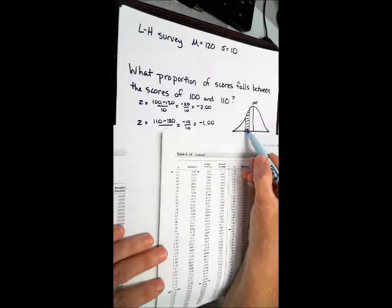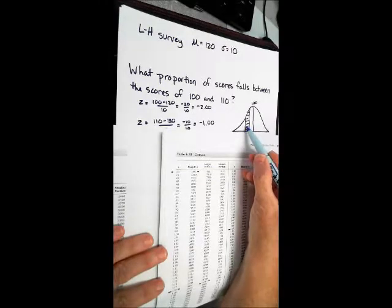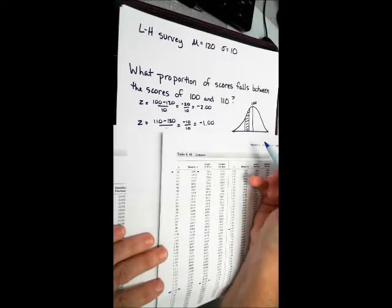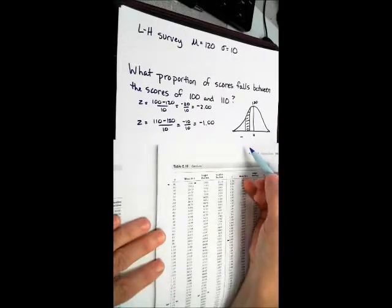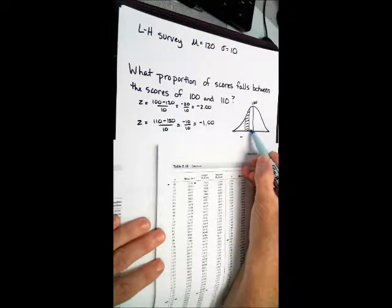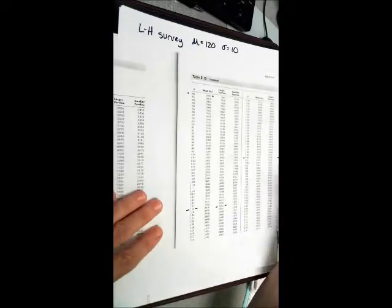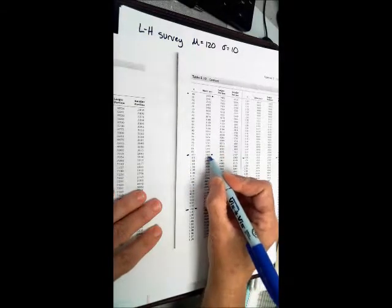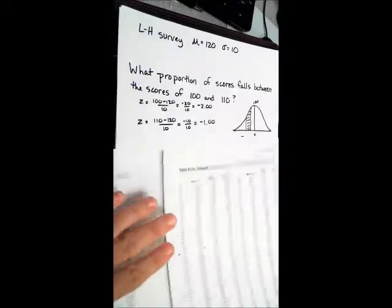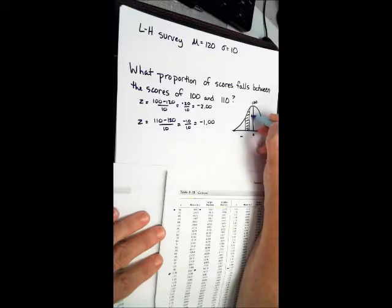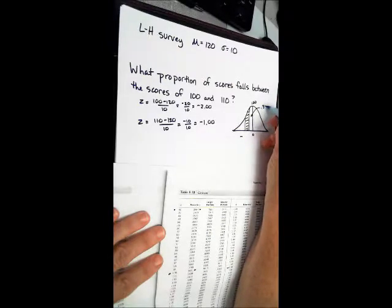But we have some things in this z-table that we can use. For example, we can find the proportion from mean to z for each of these values. So let's start with the value of 110, mean to z. We look under the mean to z column for the z-score of 1.00. Mean to z column is 0.3413. So we've got something there we can have.